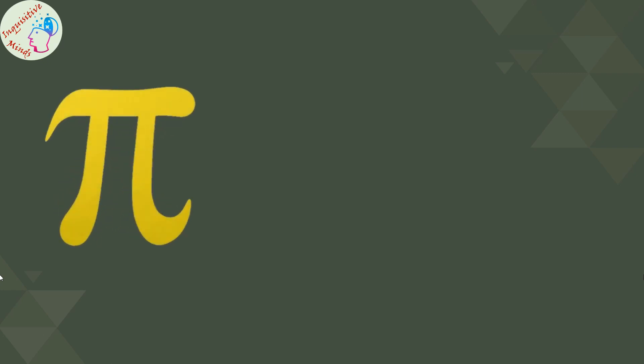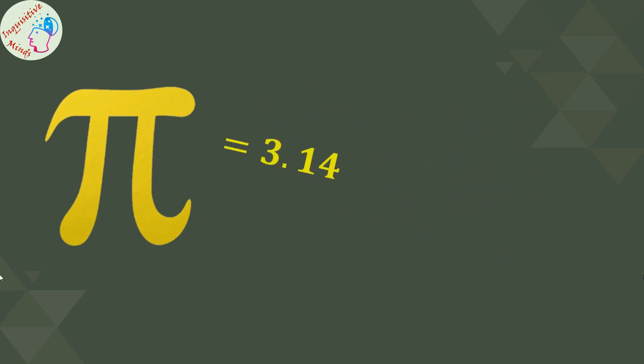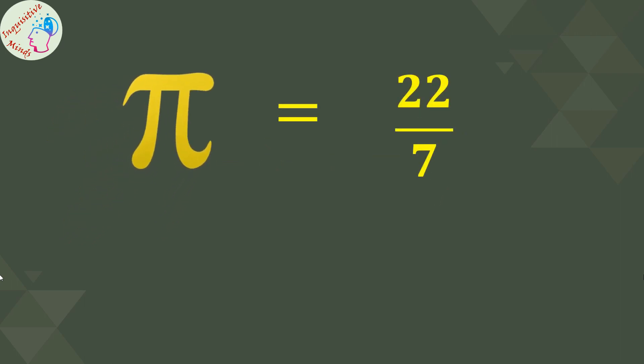Using this huge number for all practical purposes is nearly impossible. That's why it is rounded off to 3.14, which when converted into p upon q form gives us 22 upon 7.